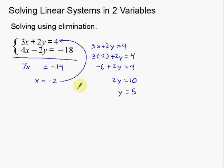Add 6 to both sides: 2y equals 10. Divide by 2 on both sides: y equals 5. So my solution is negative 2, 5. When I write my solutions, I always write them as coordinates. Negative 2, 5 would be in the second quadrant — that's where these two lines meet. That's an easy example of solving using elimination.